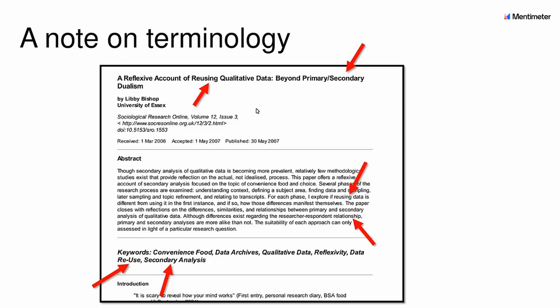There is an ongoing debate about how to call this method. In 2007, Libby Bishop wrote an article arguing there may be a privileging of methods where you go out to collect data yourself, and using terms like secondary analysis reinforces that hierarchy. Actually, primary and secondary analysis are more similar than different if you fully consider the methodological issues. Consequently, you'll find increasing use of the term data reuse, which takes into account the huge range of ways data can be used and reused, and doesn't imply any project is secondary to the initial use of data.